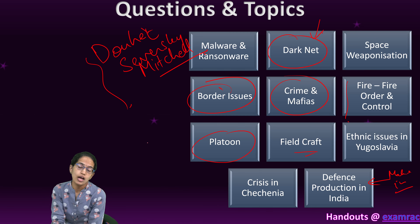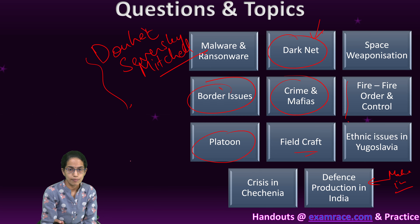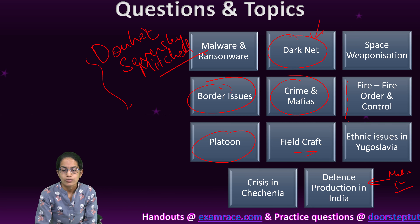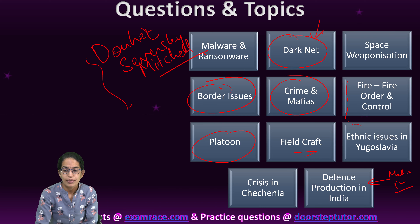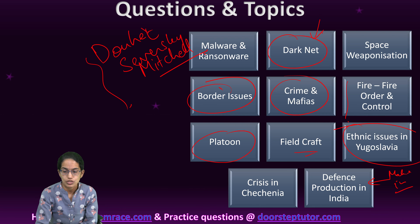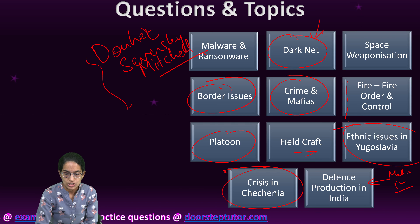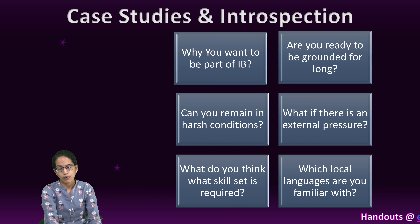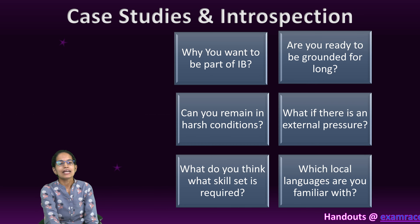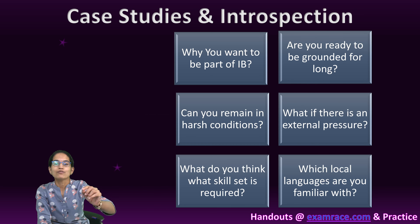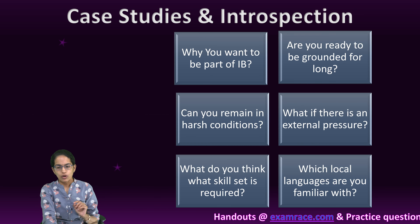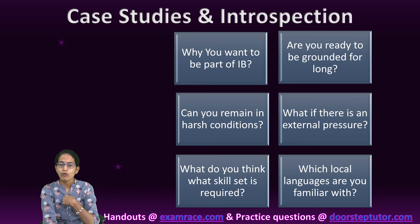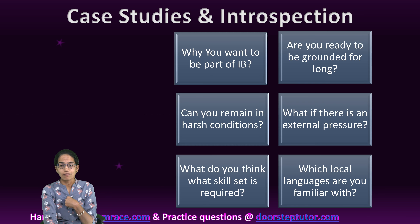We also have the heartland theory and the rimland theory by Mackinder and Spykman. Then we talk about some important issues — ethnic issues in Yugoslavia, the crisis in Chechnya, and the Taliban recent issue, which is very, very important. Besides this, you have to introspect yourself: what kind of questions can be asked to you, and what could be the best answer you can provide?